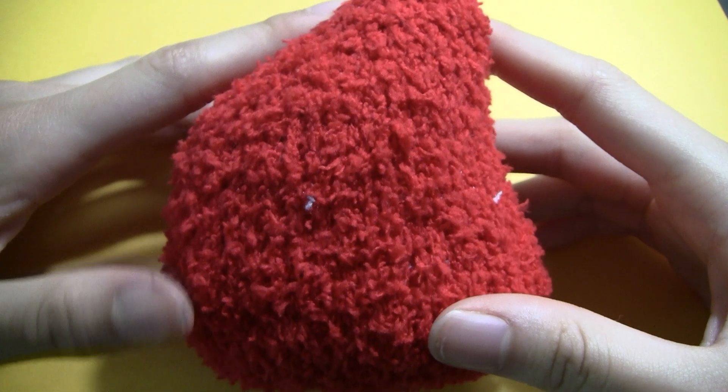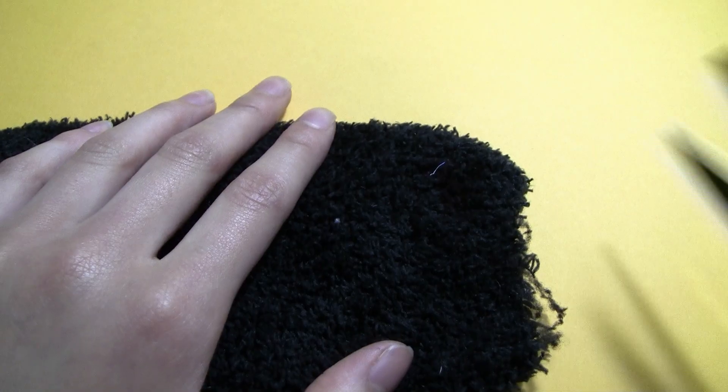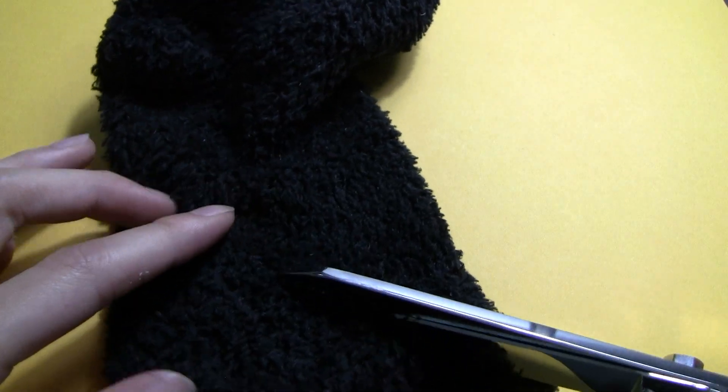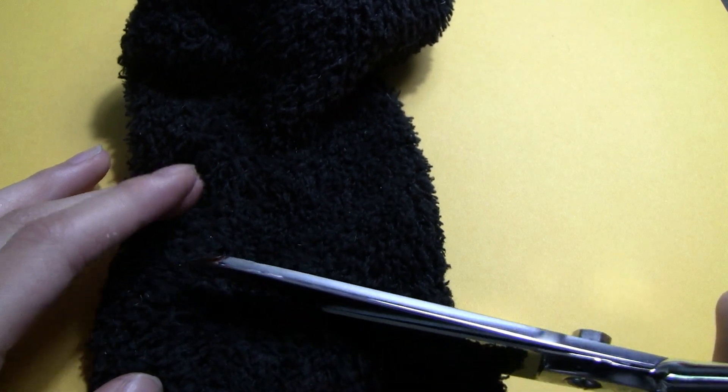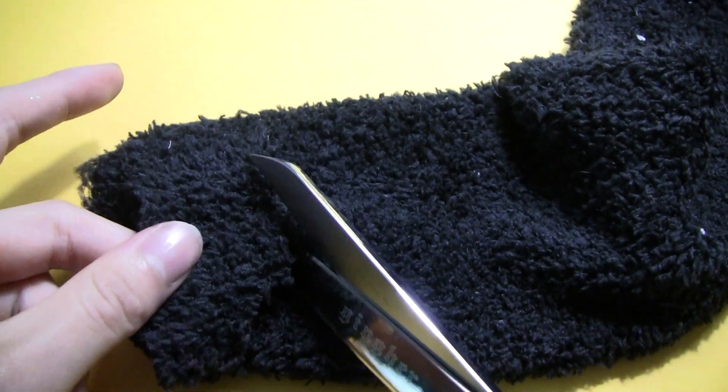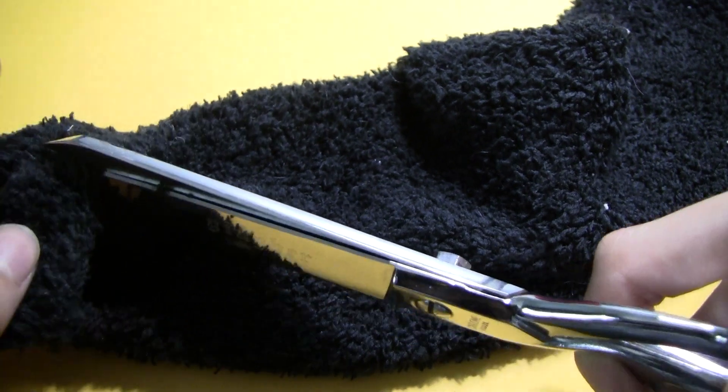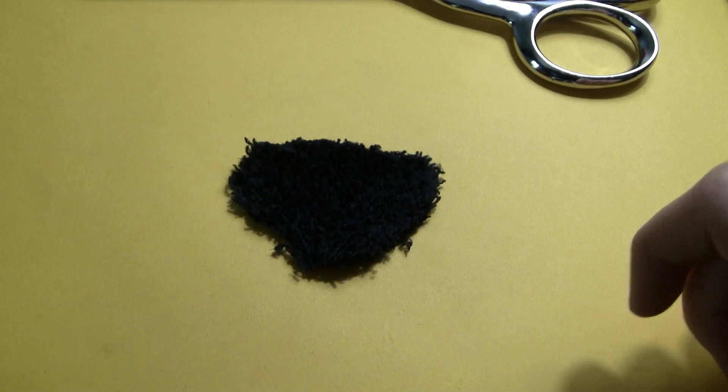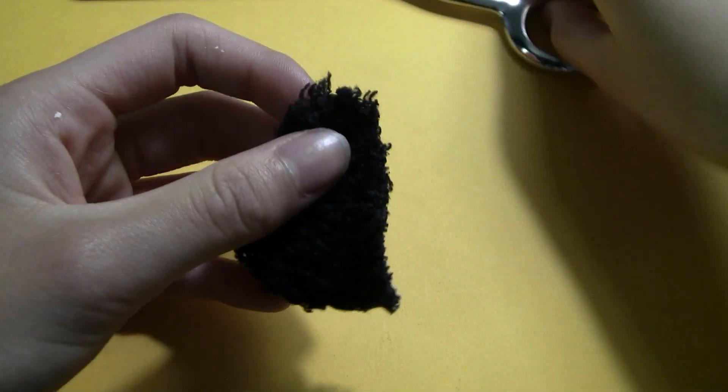At this stage your bird should look similar to this. Since the sock was black, I couldn't trace an outline to cut around for the cardinal's face. So I just cut out a rounded triangle shape that was a decent size on my plush. And here I'm just cleaning it up a bit.